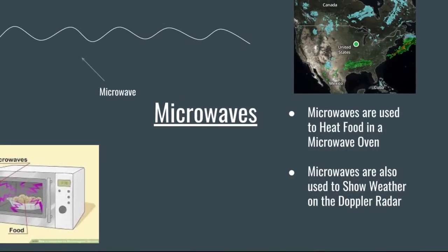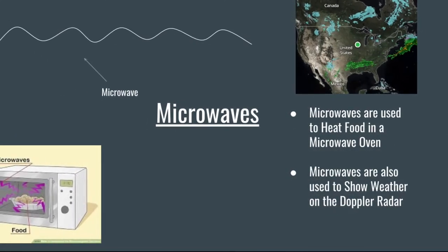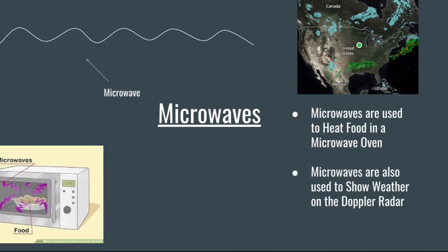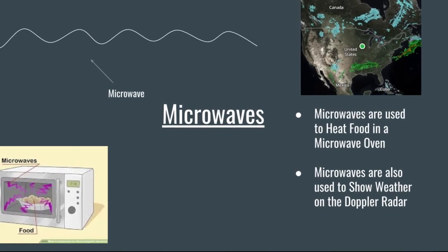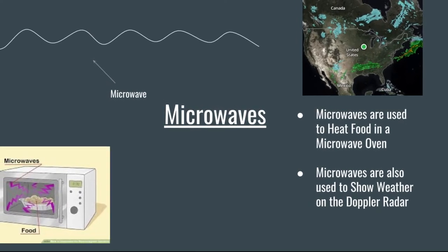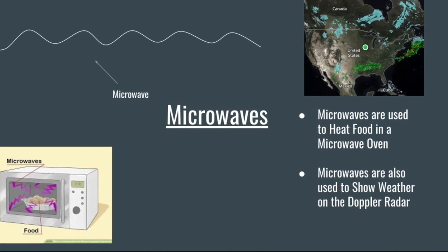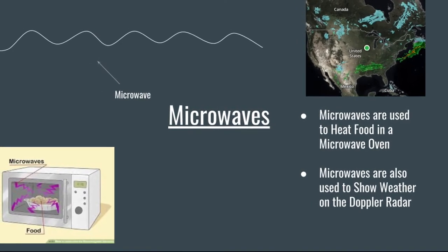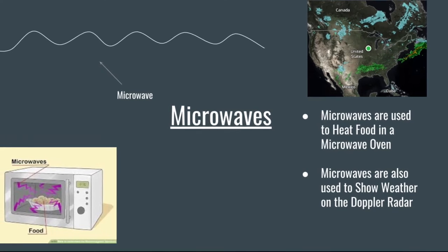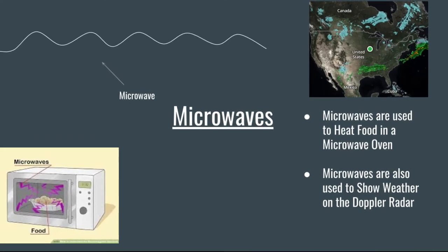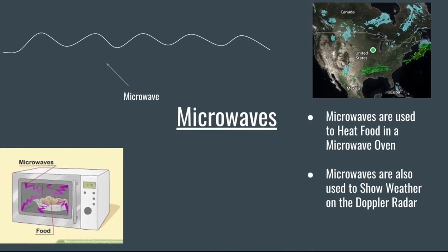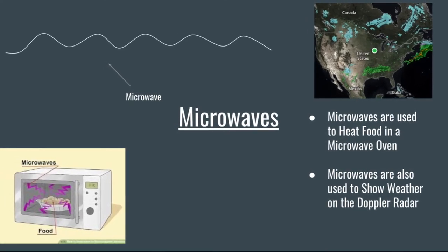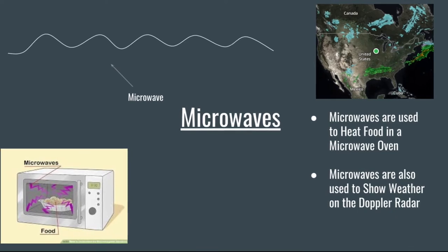Microwaves have wavelengths from 1 m to 1 mm and frequencies between 300 MHz and 300 GHz. Microwaves are used to find weather on the Doppler radar that you see on the news, and they are also used to heat food in a microwave oven.